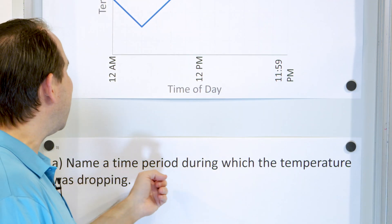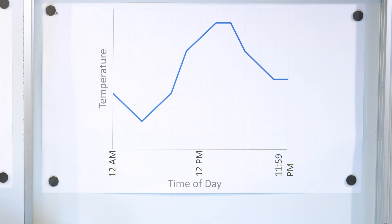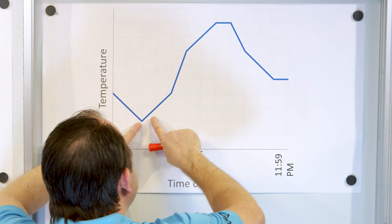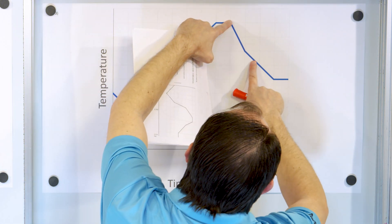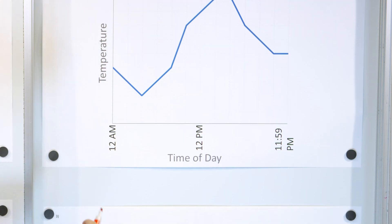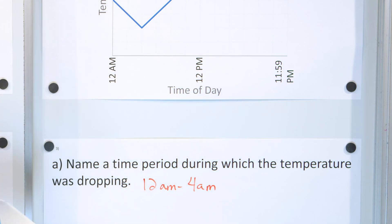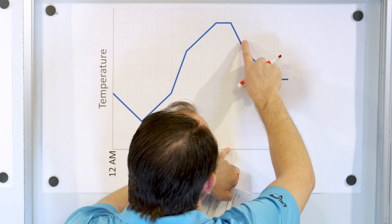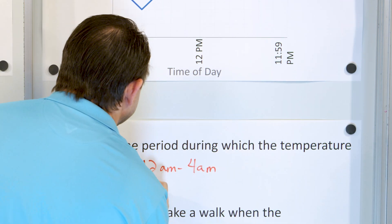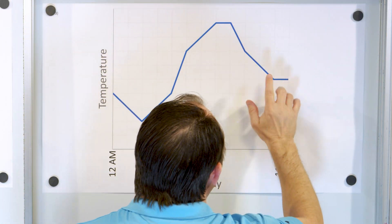Problem one: name a time period during which the temperature was dropping. There are a couple of different spots on this graph where the temperature is dropping. We can see the temperature starts from a high, hits a low — so it's dropping from 12 a.m. to 4 a.m. From here all the way to here it's increasing, this part is flat, and then throughout the afternoon it's decreasing, and then flat again. So from 12 a.m. to 4 a.m. it's dropping, and then again from 4 p.m. to 10 p.m. it's also dropping. The areas where the graph is flat, the temperature is not dropping there.